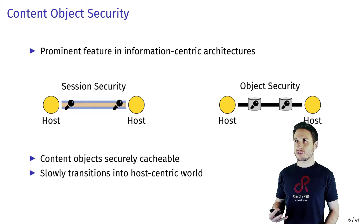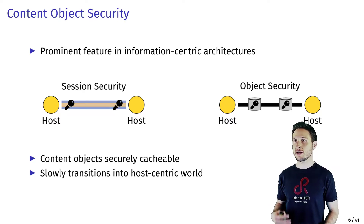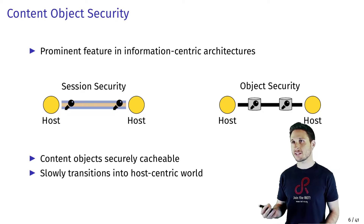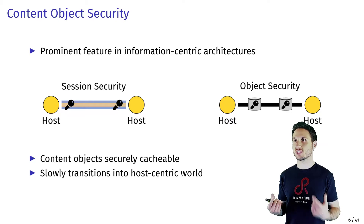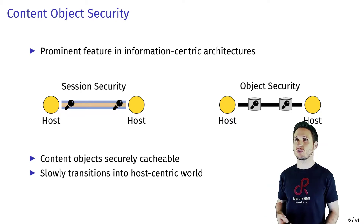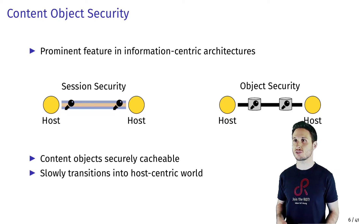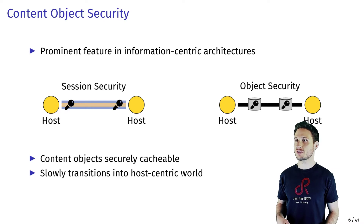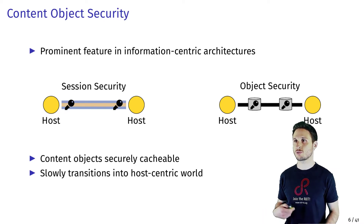The conventional method of providing protection to a communication is to use secured channels by establishing sessions between endpoints. When using object security, the data itself is protected and can be transmitted over unsecured channels. This method of protection also allows potentially caching the secured objects due to the lack of sessions. Content object security is a prominent feature in the information-centric architecture and slowly transitions into the host-centric world.